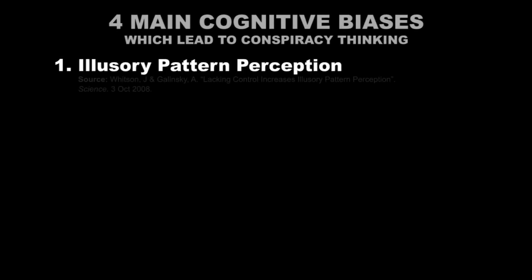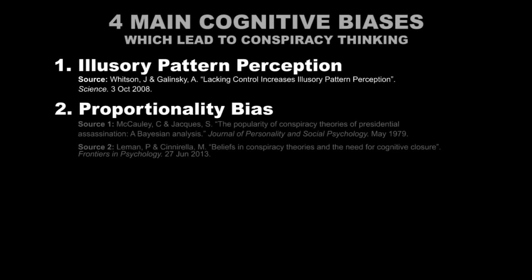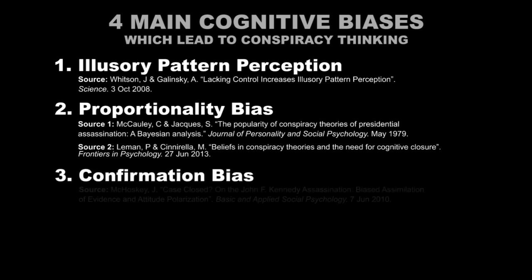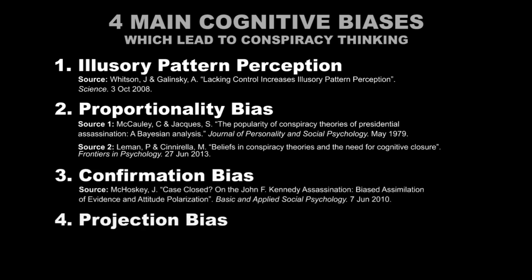As discussed in the previous series on denialism, cognitive bias is one of the main reasons why humans form false beliefs. Conspiracy theories are no exception to this. In fact, there are four main cognitive biases that humans fall victim to that tend to dispose them towards believing in conspiracy theories. They are illusory pattern perception, the proportionality bias, confirmation bias, and the projection bias.